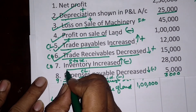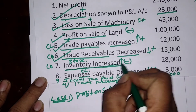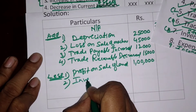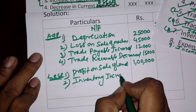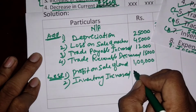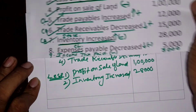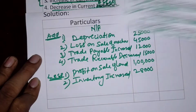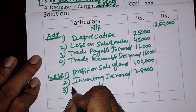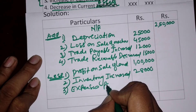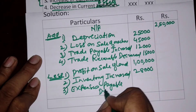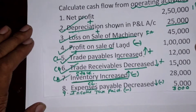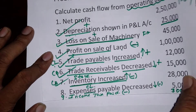Next is inventory increased — inventory is a current asset, so increased is a minus item: ₹28,000. And the next point is expenses payable decreased — expenses payable is a current liability, decreased, so it appears under less items: ₹5,000. Last, income tax paid is ₹3,000, which will be deducted at the end.